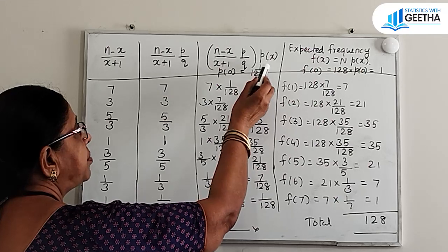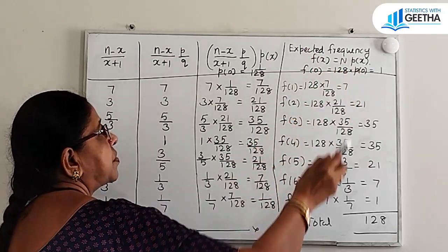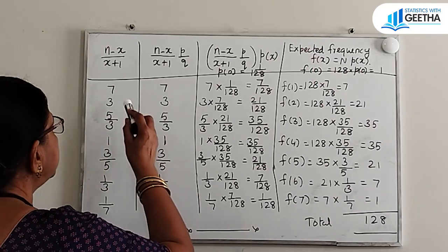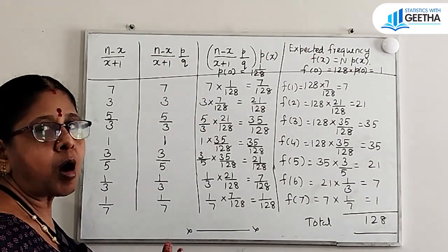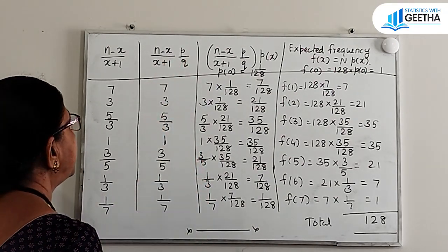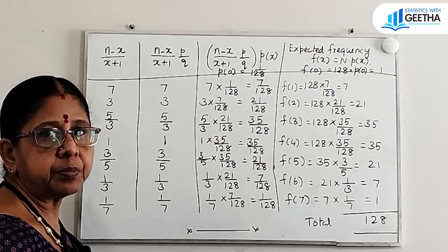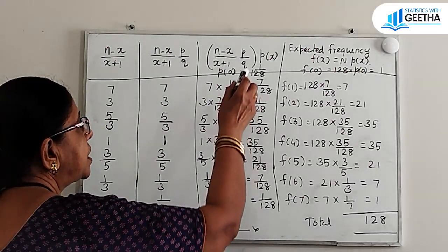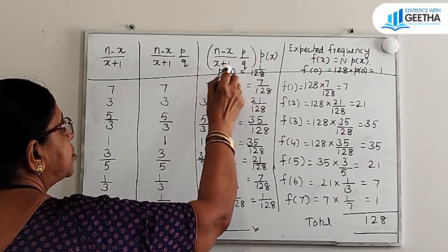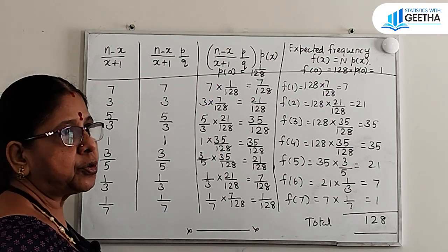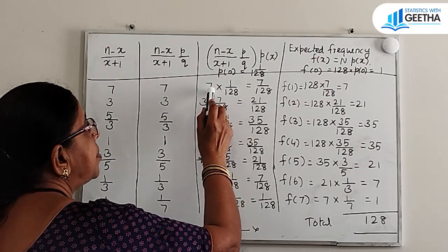For x = 0: P(0) = 1/128, and F(0) = 128 × (1/128) = 1. The multiplier (n−x)/(x+1) at x=0 is (7−0)/1 = 7. Since p/q = (1/2)/(1/2) = 1, the factor is 7 × 1 = 7. So P(1) = 7 × (1/128) = 7/128.